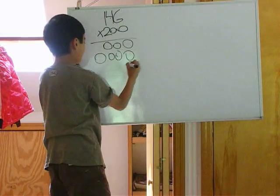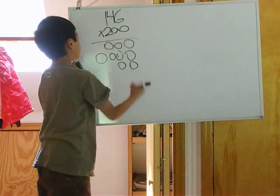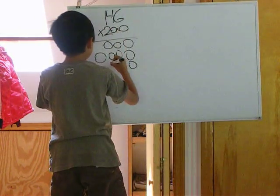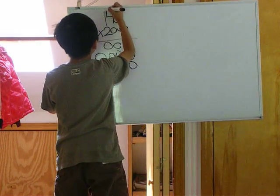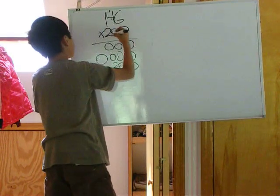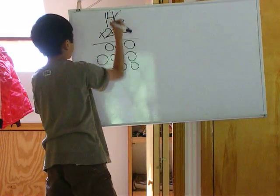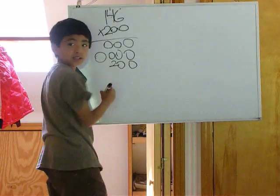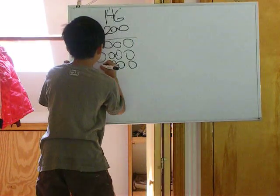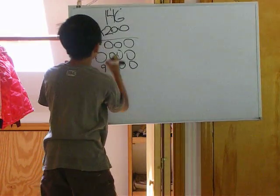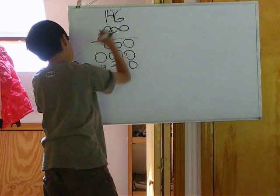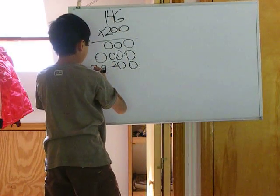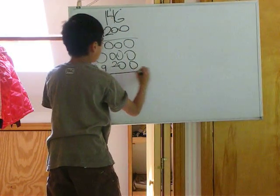Bring two arrows down. 2 times 6, 12. 2 times 4, 8. Plus 1, equals 9. 2 times 1, 2. Now add them all together.